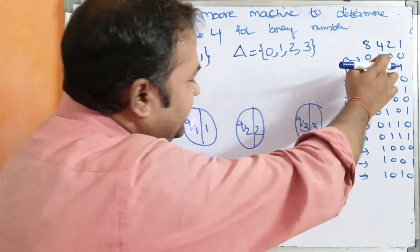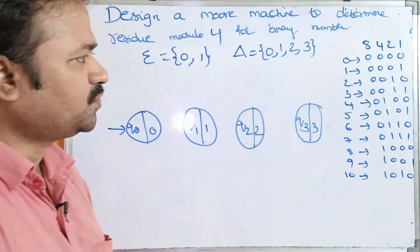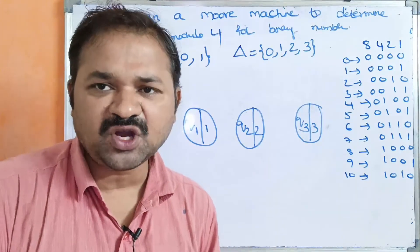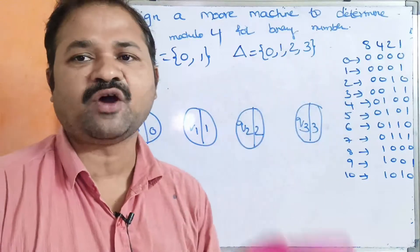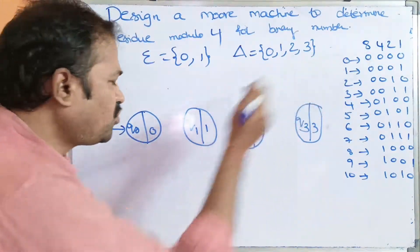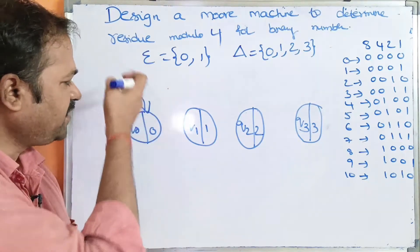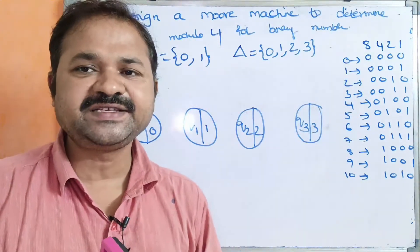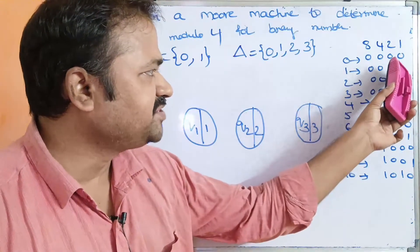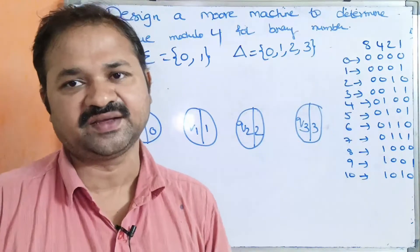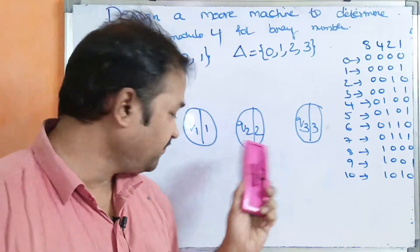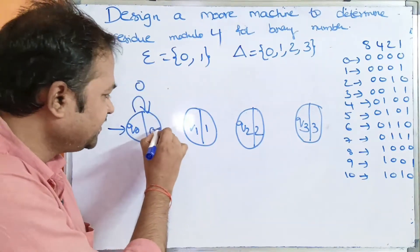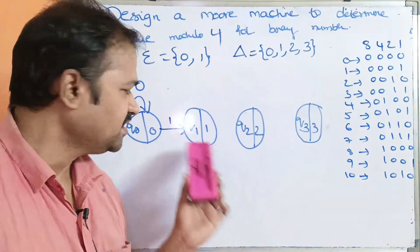Consider the first digit 0: 0 modulo 4 is 0, so we need output 0, which is Q0. Applying zeros gives a self-transition at Q0. For input 1: 1 modulo 4 is 1, so applying 0001 means three leading zeros keep us at Q0, then applying 1 takes us to Q1. Output of Q1 is 1.